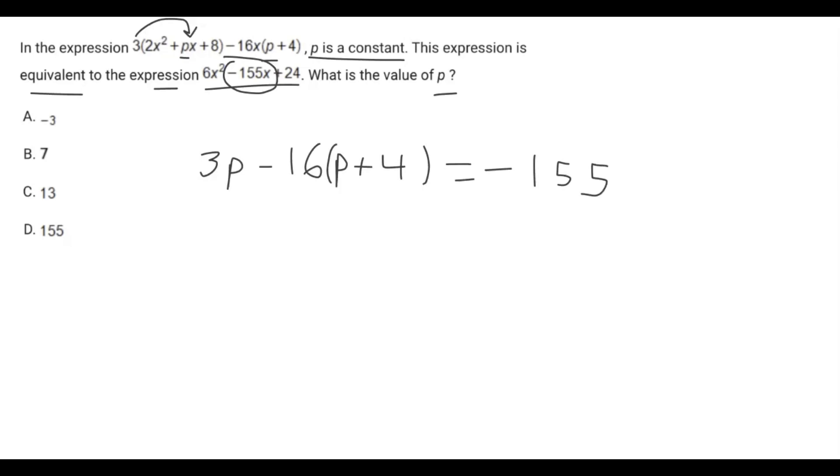That is all equivalent to, we're dropping the x, so that's just negative 155. Let's do some distributive property. Negative 16 times p is negative 16p, and negative 16 times positive 4 is negative 64.